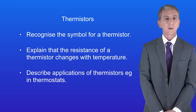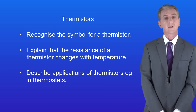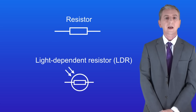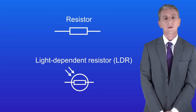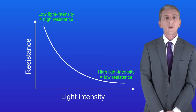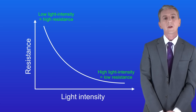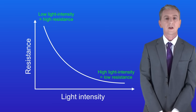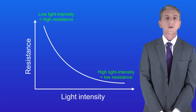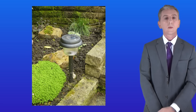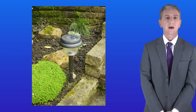In the last few videos we've been looking at resistors, and here are the symbols for a resistor and a light dependent resistor. We saw that light dependent resistors have a high resistance in dark conditions and a very low resistance in light conditions. We find LDRs in devices such as garden lamps which come on automatically at night.